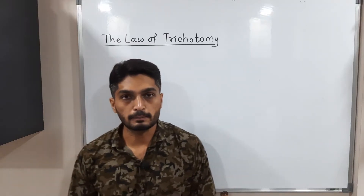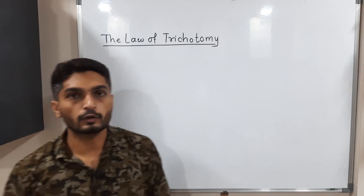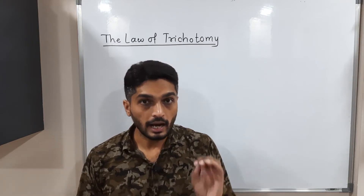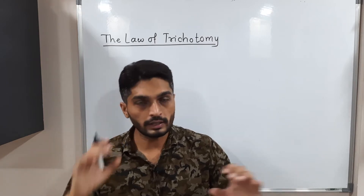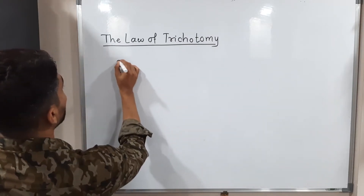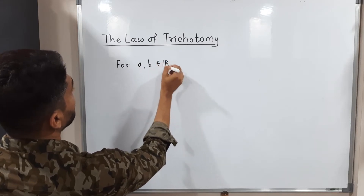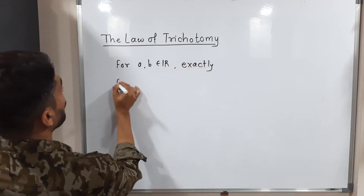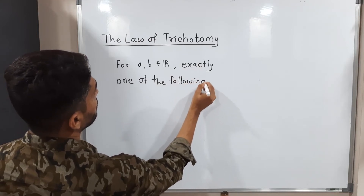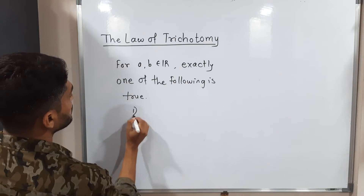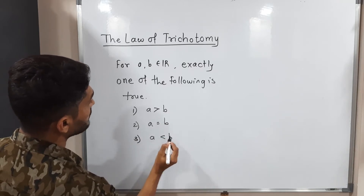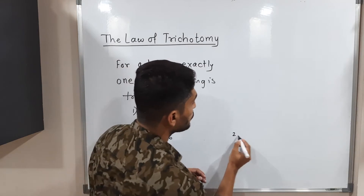Let's discuss a few interesting properties of real numbers. The first is the Law of Trichotomy. This says: if you have any two real numbers a and b, then for a, b belonging to ℝ, exactly one of the following is true: a is greater than b, a is equal to b, or a is less than b.